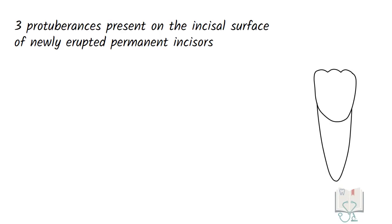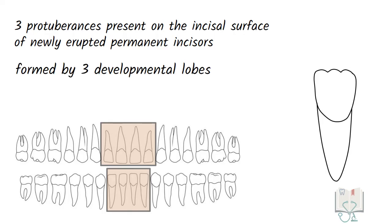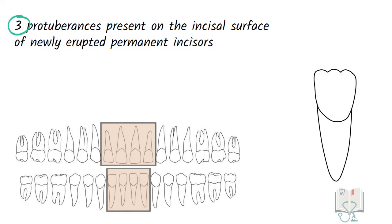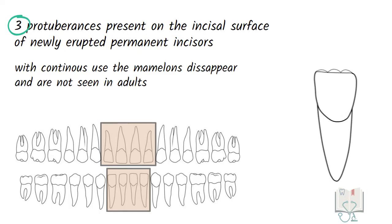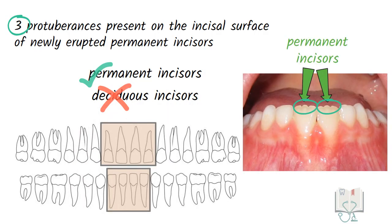Mamelons are three protuberances present on the incisal surface of a newly erupted permanent incisor, seen in all permanent incisors. They are formed by the three developmental lobes which form the labial surface of incisors: the mesial, labial, and distal developmental lobes — which is why they are always three in number. With continuous use of the tooth, the mamelons disappear, making the incisal ridge straight. Mamelons are not present in deciduous incisors and are often used to differentiate a permanent incisor from a deciduous incisor in children.